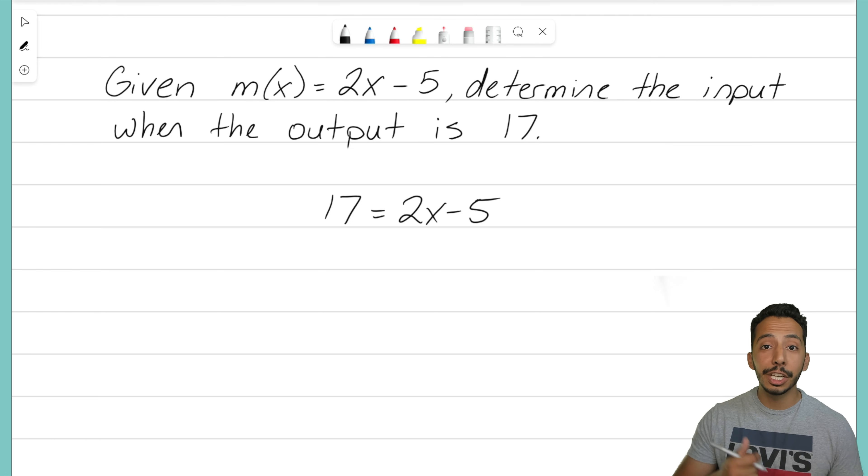So now what we just have to do is take that equation there, solve for x, and figure out what our input is. So let's go ahead and do that. I want to solve for x. I want to isolate that x variable. To do that we need to move some stuff over to the left side of that equation.